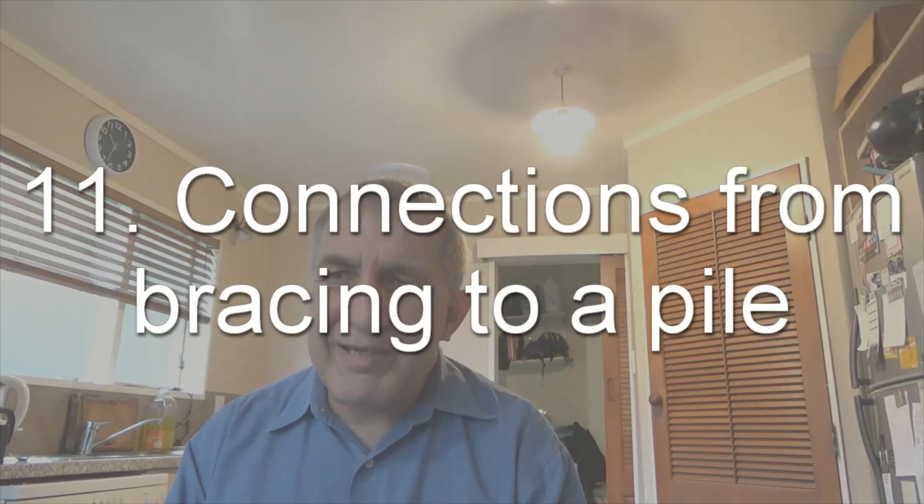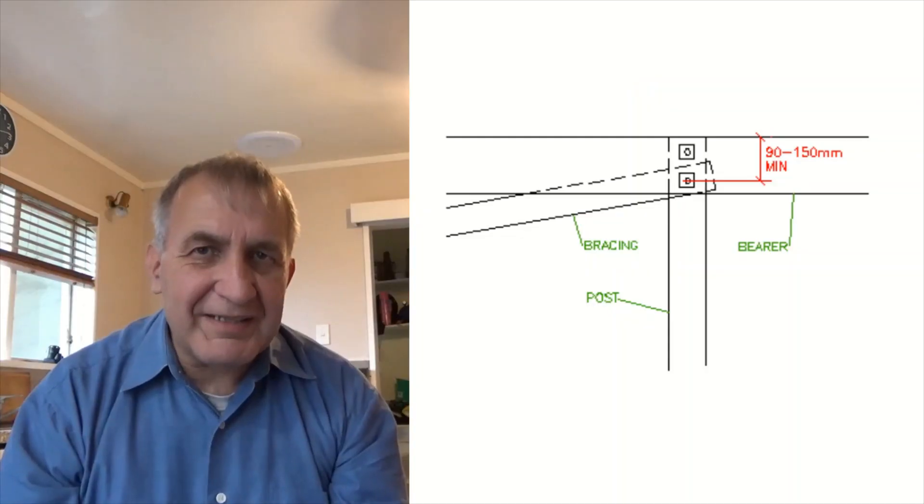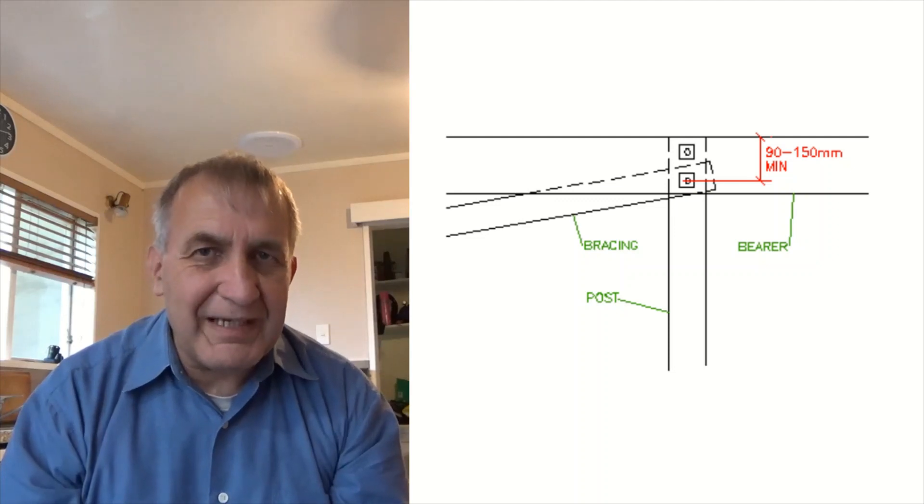The connection between the bracing and the pole needs to be fixed using M12 stainless steel fasteners. There's also restrictions stating that this fastener must be between 90 to 150 millimeters from the top edge of the bearer. Only one brace can be attached to the top of a pile.